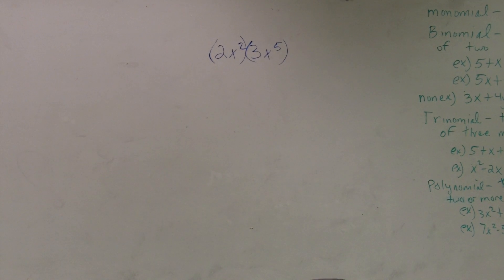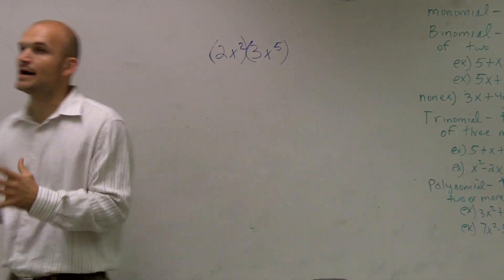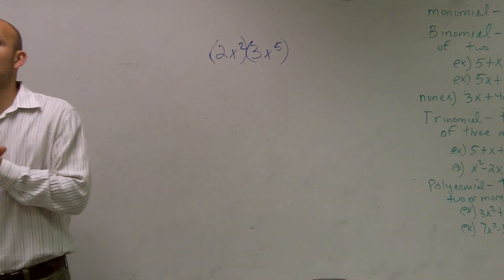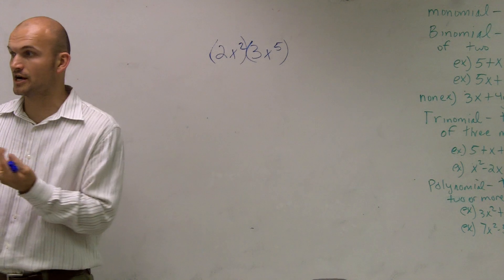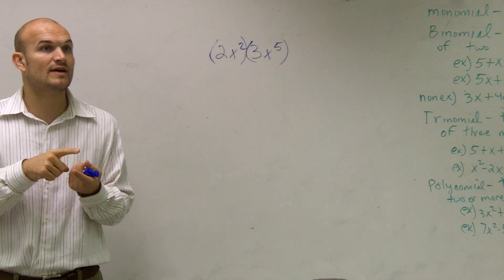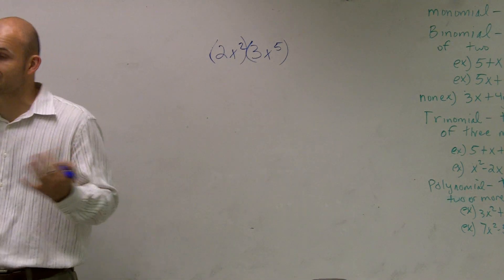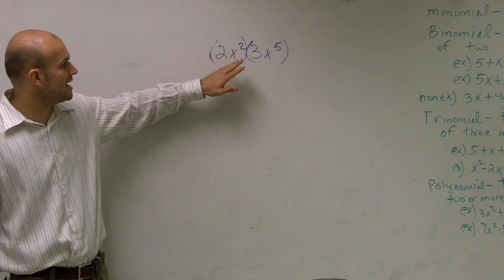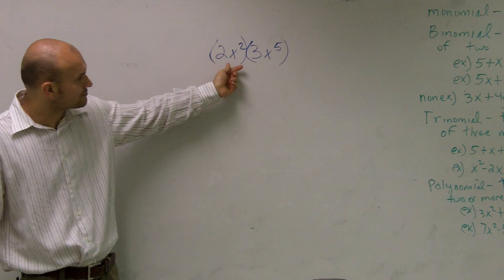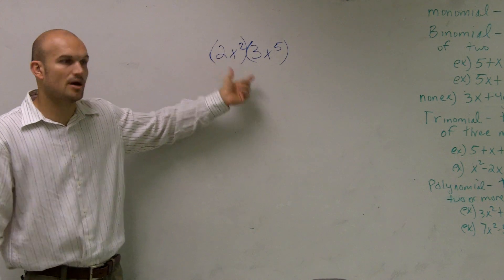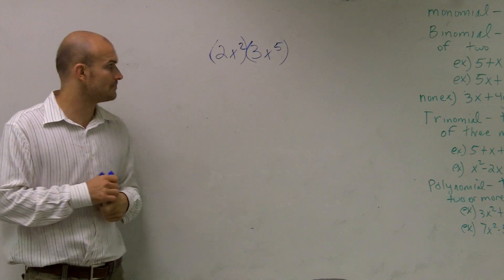I'm not trying to make this too difficult. So ladies and gentlemen, we're multiplying monomials. A couple things to remember about a monomial: a monomial is a number, a variable, or the product of a number and one or more variables with a positive exponent. Here we have two monomials — they're numbers and variables multiplied by each other, and they have positive exponents, so they work.